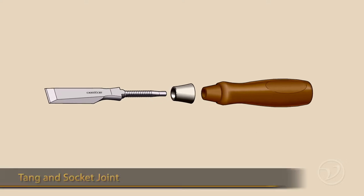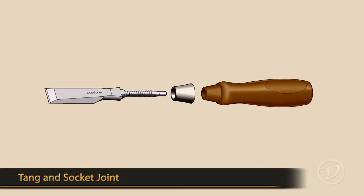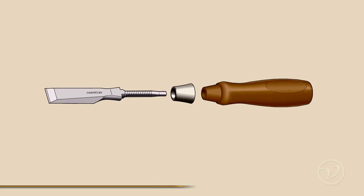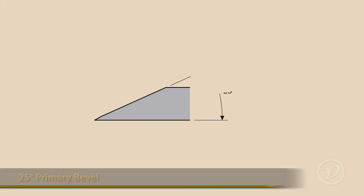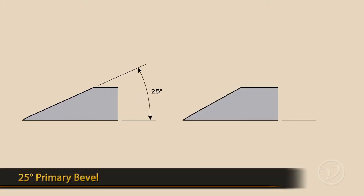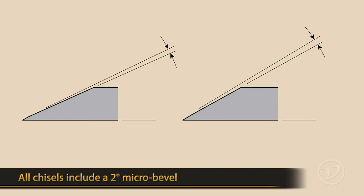Like our bench chisels, the blade is connected to the heat treated maple handle with a tang and socket joint. All of the chisels have a primary angle of 25 degrees except the quarter inch which has a 30 degree primary angle for a more robust edge. All the chisels have a two degree micro bevel.